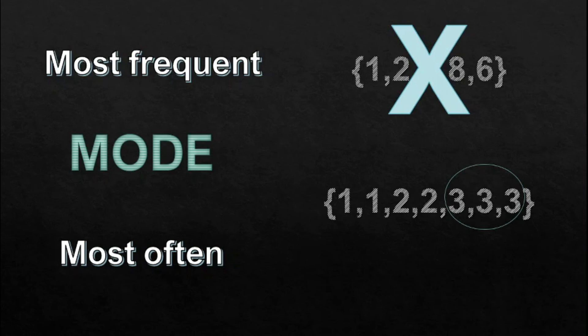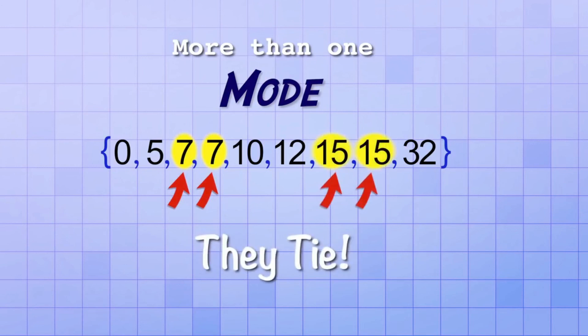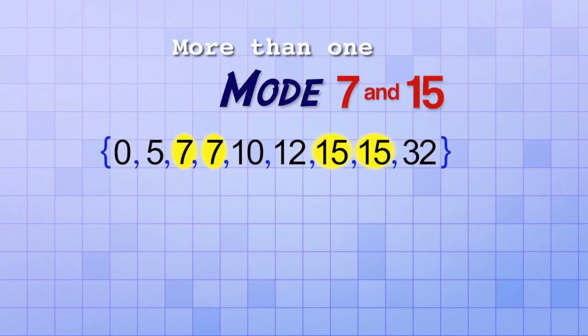And there are also data sets which have more than one mode. For example, as you can see, in this set, 7 is repeated twice and also 15. That means they tie for the title, mode. So, the modes are 7 and 15.